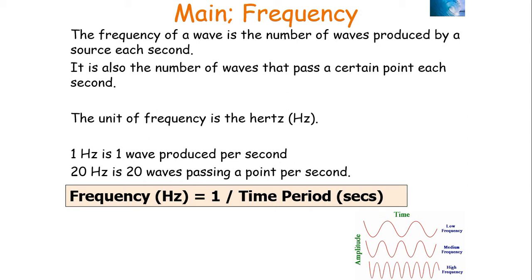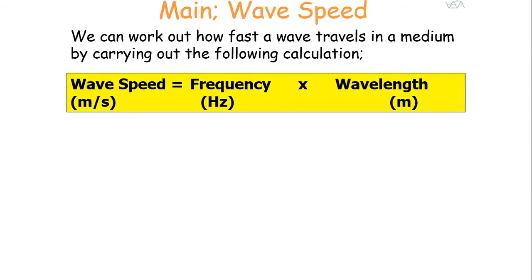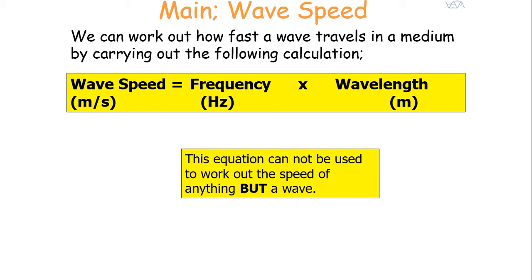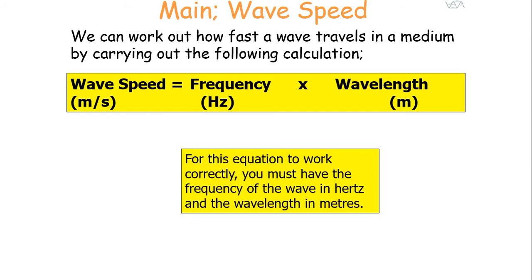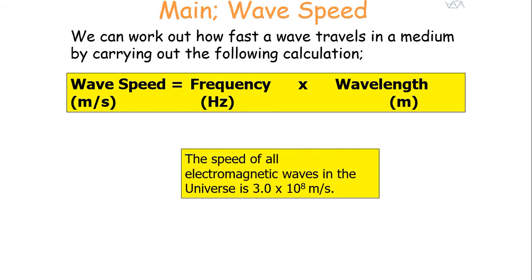We can work out how fast a wave travels in a medium using the following: wave speed in metres per second equals the frequency in hertz times the wavelength in metres. This equation shows how fast a wave will transfer energy through the universe, and it can only be used to work out the speed of a wave. For this equation to work correctly, frequency must be in hertz and wavelength must be in metres, so you'd need to convert values if they weren't given in those units.